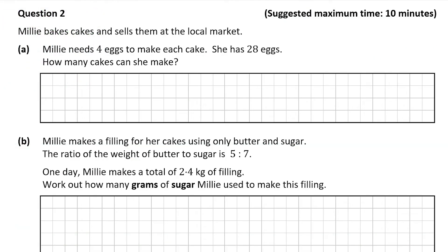Question two tells us that Millie bakes cakes and she sells them at the local market. Part A says she needs four eggs to make each cake. She has 28 eggs so how many cakes can Millie make? This is very straightforward. We just divide four into 28 and that's seven. A very straightforward question there. I don't think many people should have issues with that.